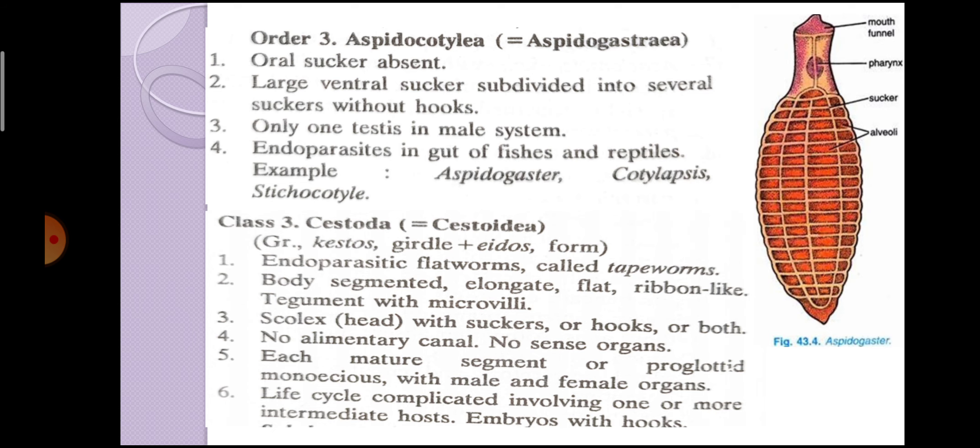Next class is Class Cestoda — the third class of Phylum Platyhelminthes. This is derived from the Greek word where 'cestos' means girdle and 'edos' means form. These are endoparasitic flatworms also known as tapeworms — flat worms also called ribbon worms or 'feeta krami' in Hindi.